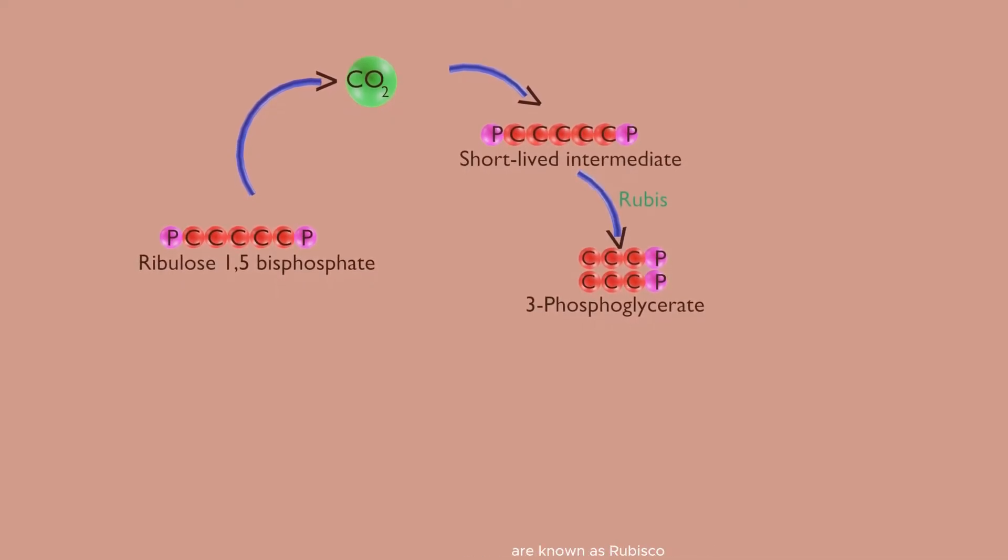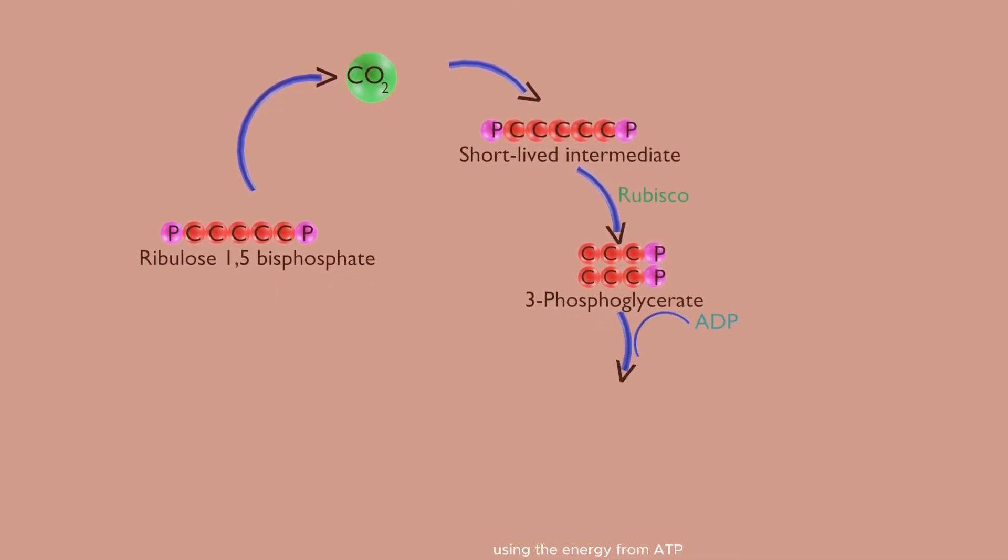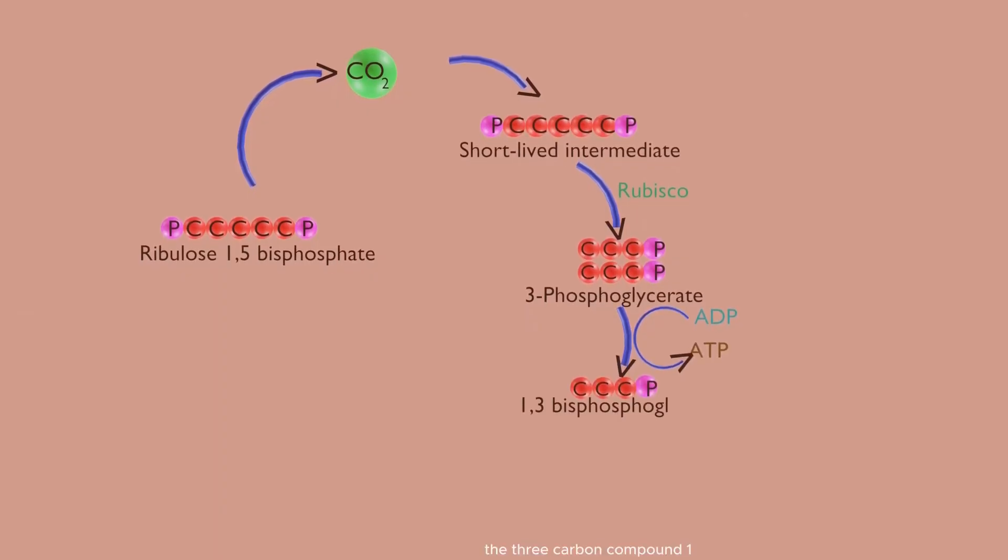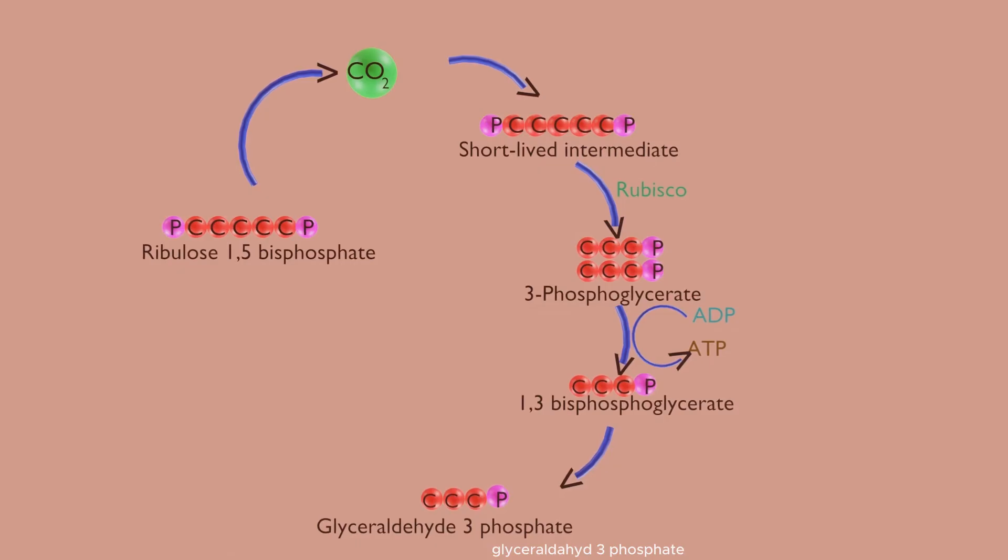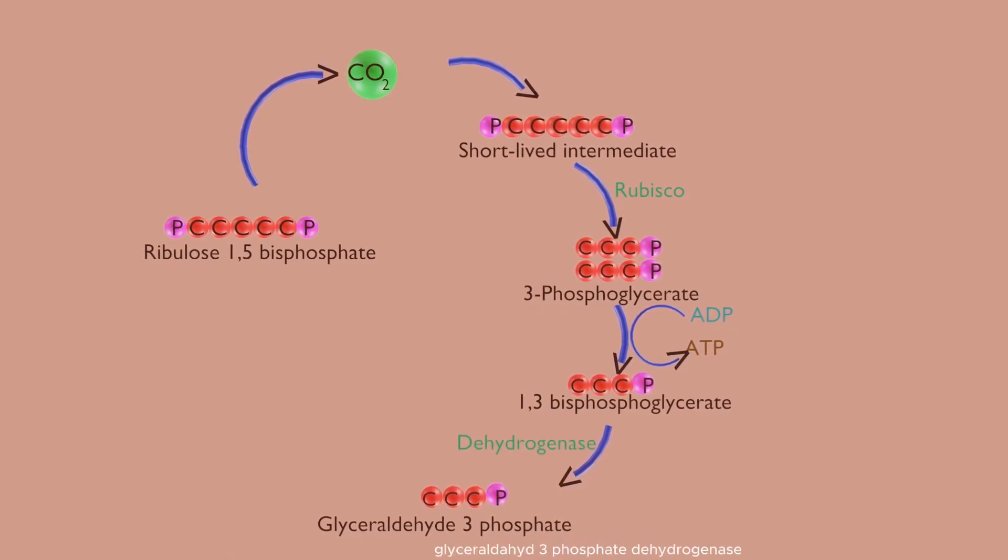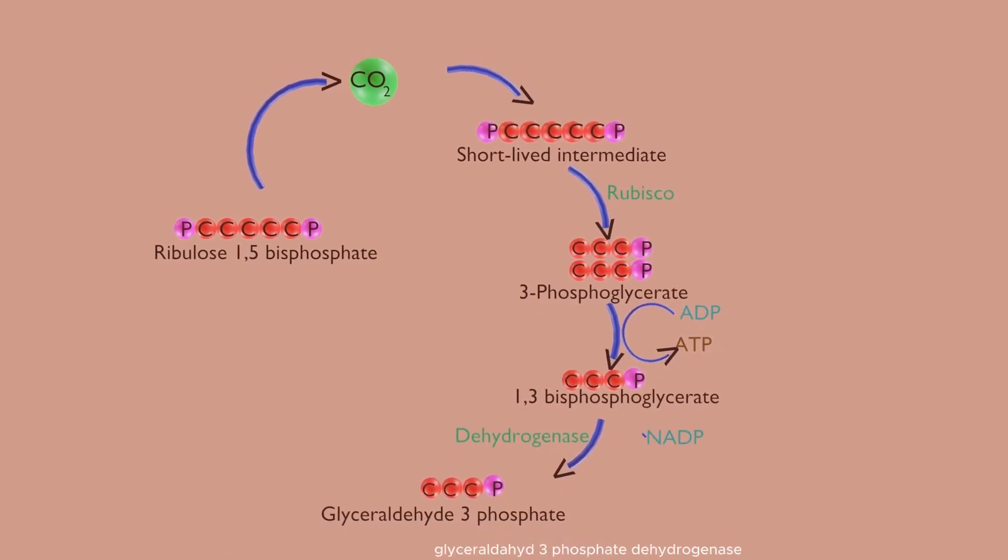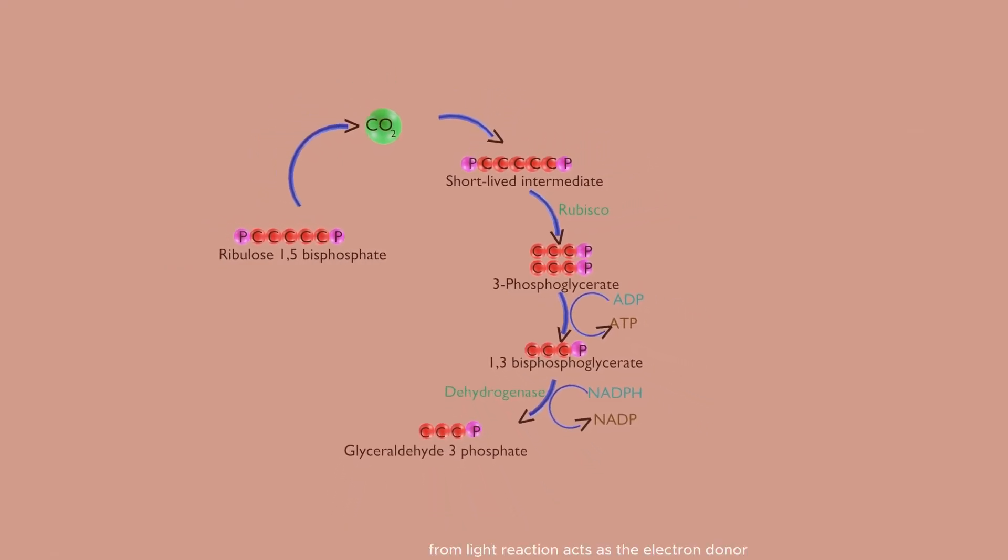Using the energy from ATP, the three-carbon compound 1,3-bisphosphoglycerate molecules are produced. 1,3-bisphosphoglycerate are converted into a three-carbon sugar glyceraldehyde 3-phosphate with the help of enzyme glyceraldehyde 3-phosphate dehydrogenase, in which NADPH from light reaction acts as the electron donor. Some glyceraldehyde 3-phosphate is utilized in making glucose, while others are recycled to continue the cycle